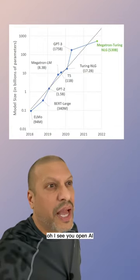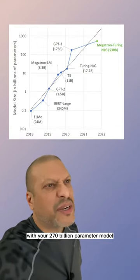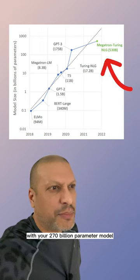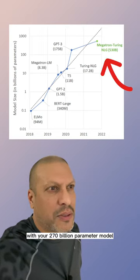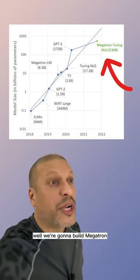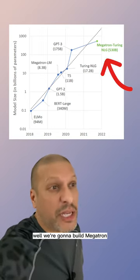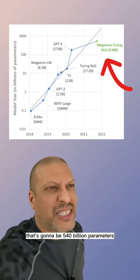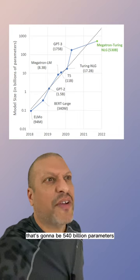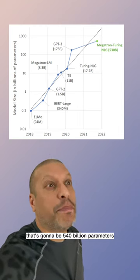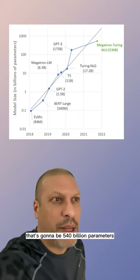Oh, I see you, OpenAI, with your 270 billion parameter model. Well, we're going to build Megatron. That's going to be 540 billion parameters.